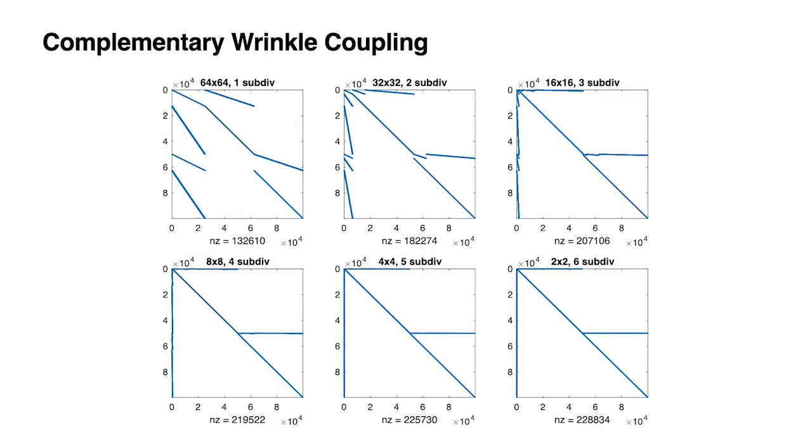Our method supports multiple subdivisions to capture a wide range of wrinkles with various wavelengths. Our basis matrices P and Q always maintain their nice sparsity patterns regardless of the number of subdivisions.